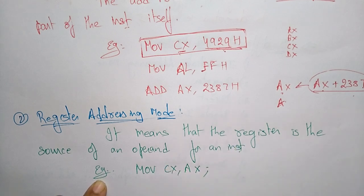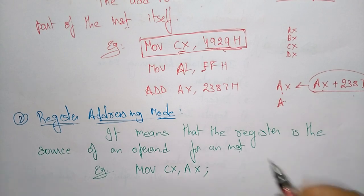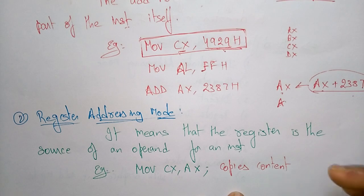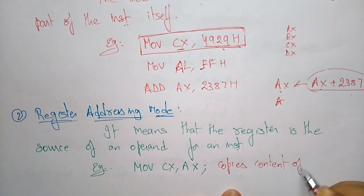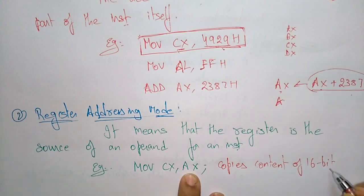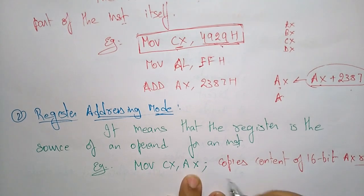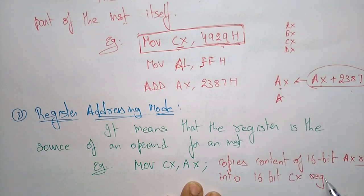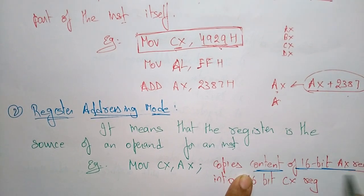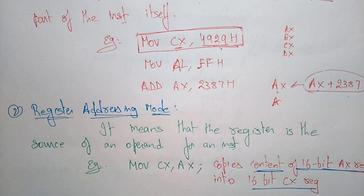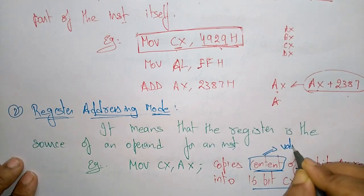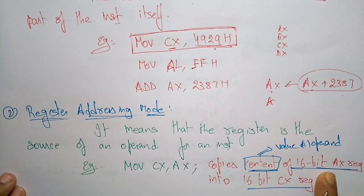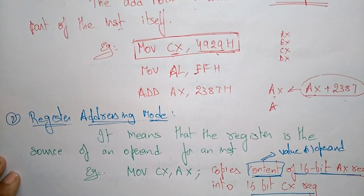In MOV CX, AX, the instruction copies the content — meaning the value or operand — of the 16-bit AX register into the 16-bit CX register. Whatever data is present in AX is moved into CX. That value or operand present in AX register is moved into CX register. This is register addressing mode.